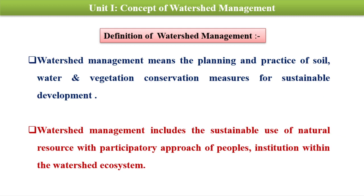Here the definition of watershed management is given. There are two definitions and between them some common words are there. In the first definition, watershed management is defined as the planning and practice of soil, water and vegetation conservation measures for sustainable development. For the sustainable development of watershed, planning and practice of these three resources — soil, water, and vegetation — and their conservation measures is a part of watershed management.